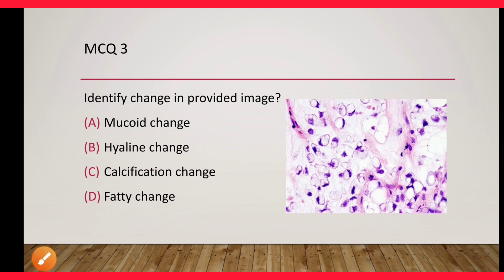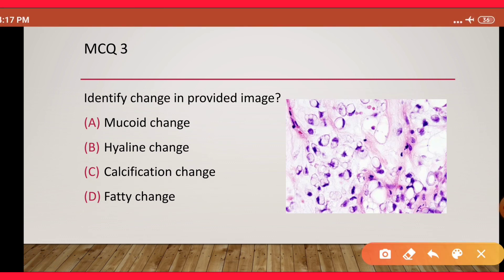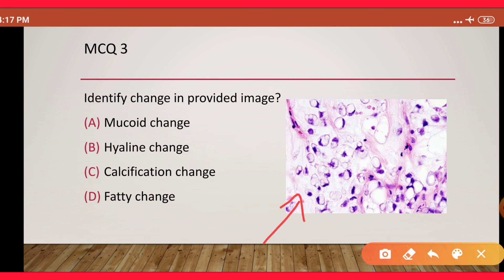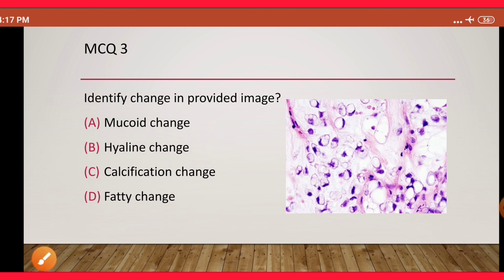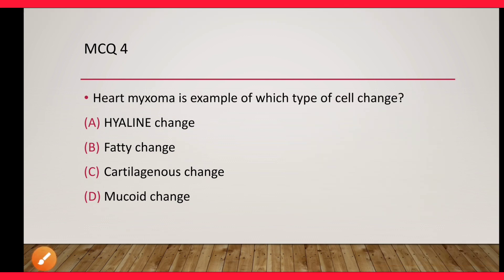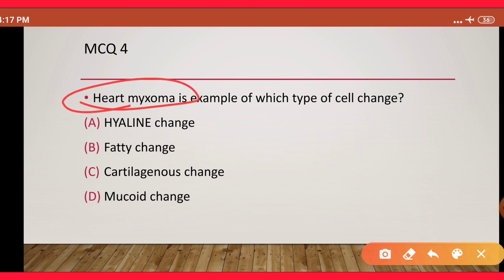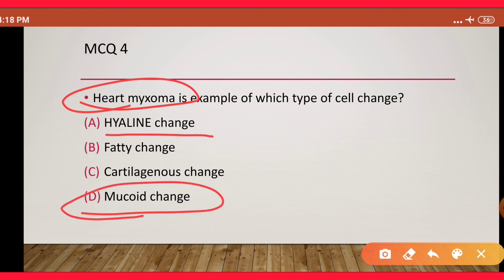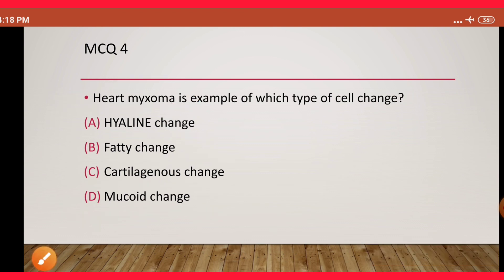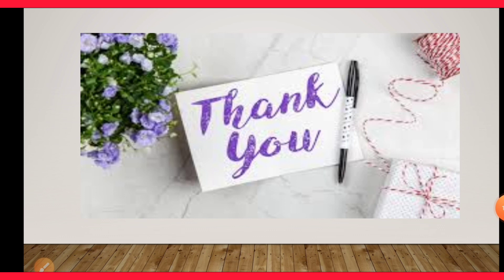MCQ 3: Identify the change in the provided image — this is a case of liposarcoma with mucoid material (white color) in between — it is an example of mucoid change. MCQ 4: Heart myxoma is an example of which type of cell change? The name itself suggests it — myxoma means mucoid change. It is not hyaline change, fatty change, or cartilage change; the answer is myxoid/mucoid change.